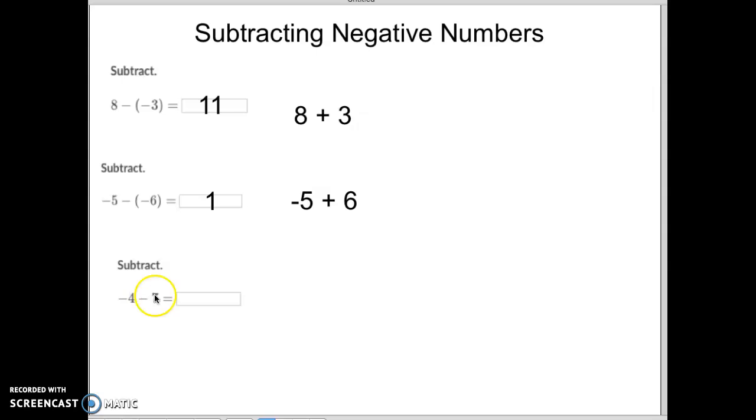All right. One more example here. We've got negative 4 minus 7. So we're going to change that to negative 4 plus negative 7. So that's kind of how that looks right there. So if I owe one person $4 and I owe another person $7, man, I owe a lot of money.